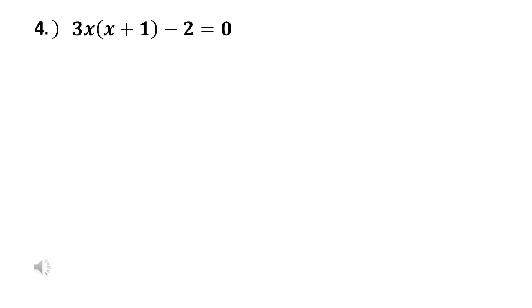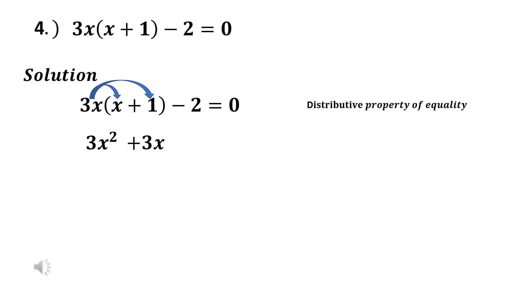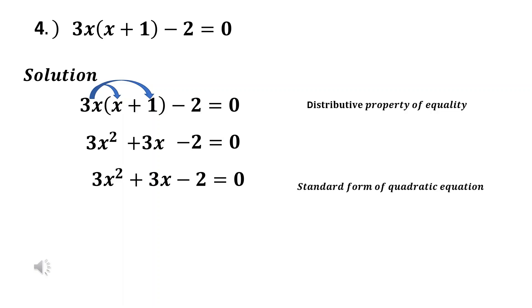Example number four: the given equation is 3x(x + 1) - 2 = 0. We remove the parenthesis using the distributive property, multiplying 3x inside. 3x times x gives 3x², and 3x times positive 1 gives positive 3x. So we have 3x² + 3x - 2 = 0, which is the standard form.